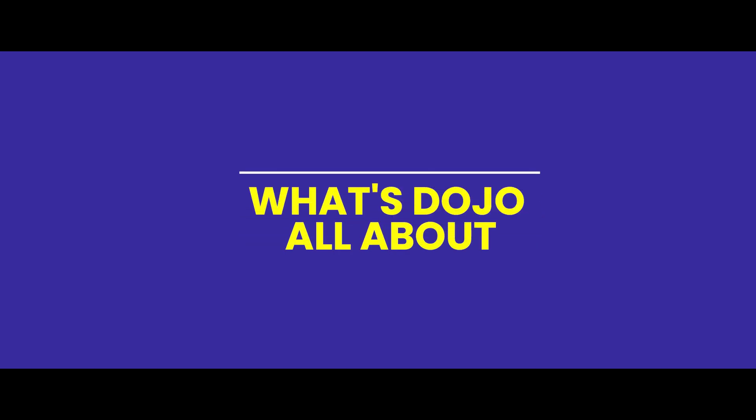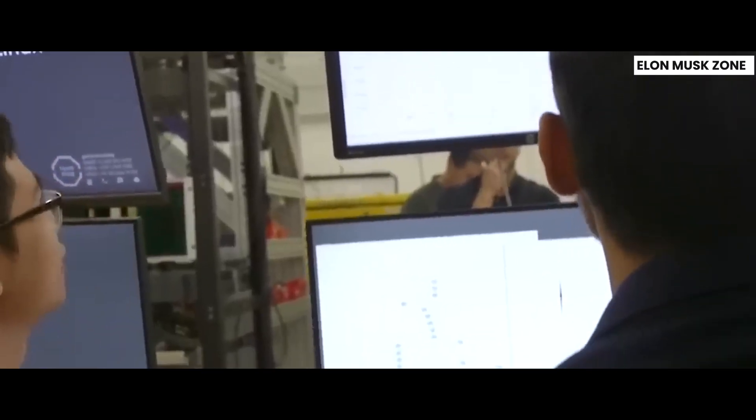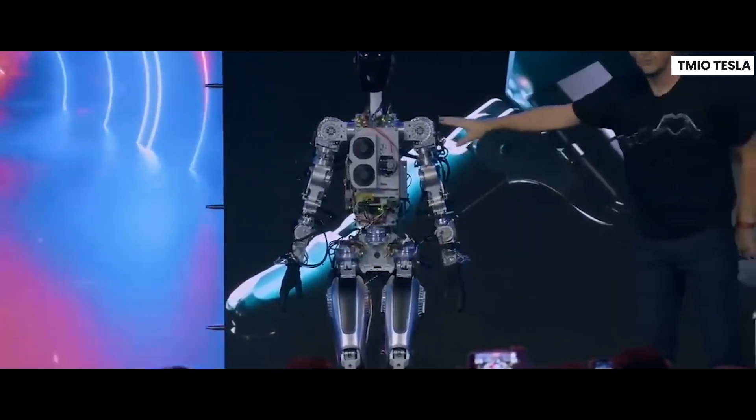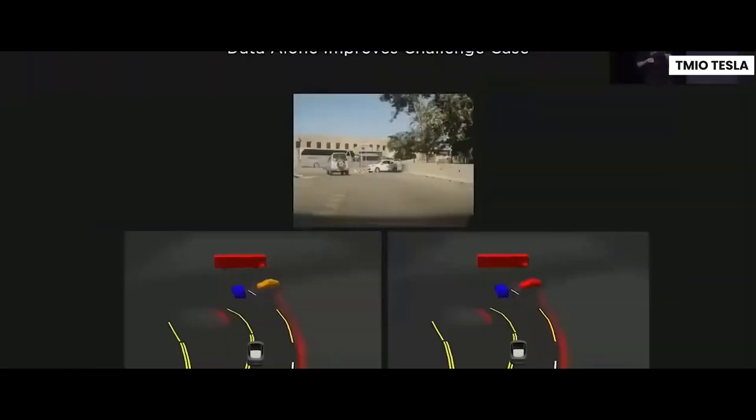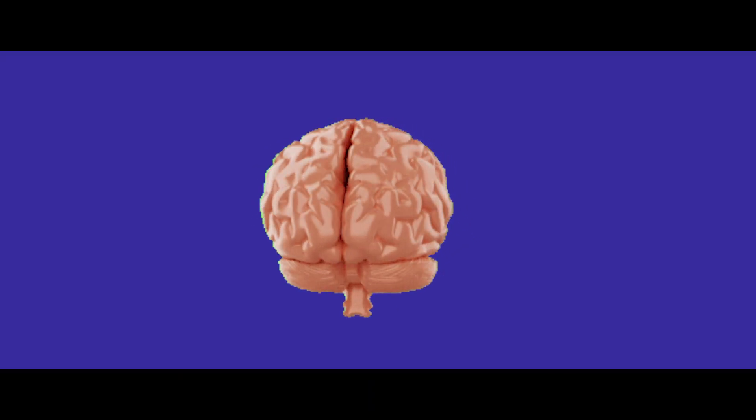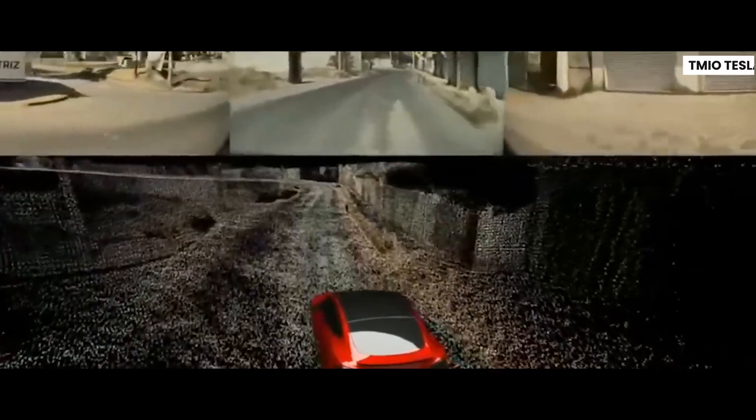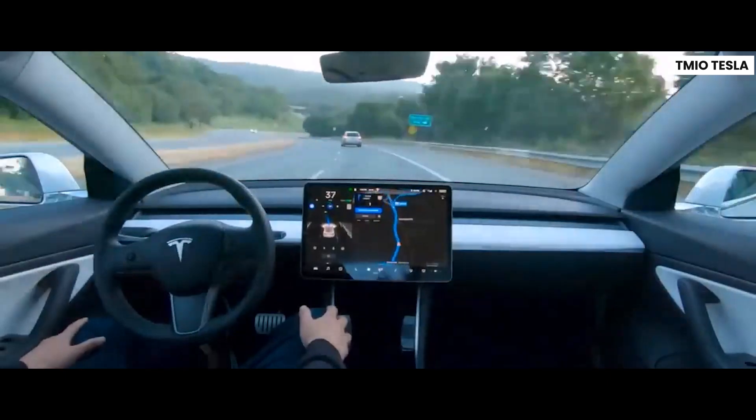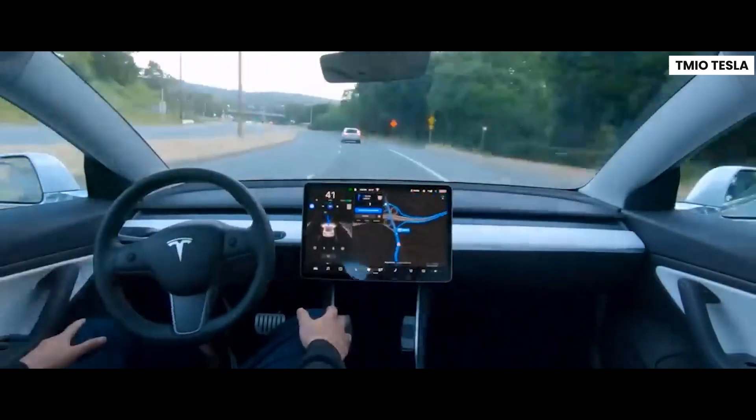So, what's Dojo all about? Well, it's Tesla's very own supercomputer made specifically for training their artificial intelligence systems. It's designed to learn from the video data collected by Tesla's cars and get even smarter at driving. Basically, Dojo is like a super powerful brain that helps Tesla's cars learn and improve their driving skills. It's all about using AI and machine learning to make self-driving cars even better.